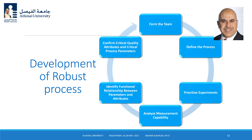In process development, a team is formed to define the process, set up experiments, analyze measurement capabilities, identify functional relationships between parameters, and confirm critical quality and process parameters. This is a quick approach to achieving process robustness. Guidance is available in ICH quality guideline Q10 and the FDA's PAT initiative, which guide the industry toward a well-defined, robust process outcome. Thank you very much.